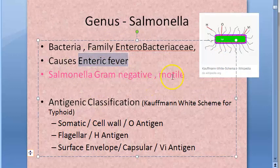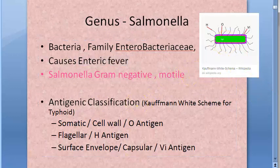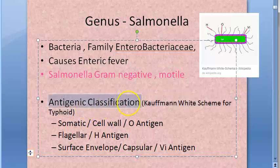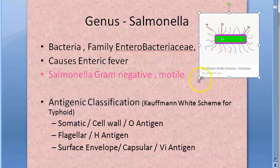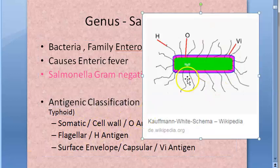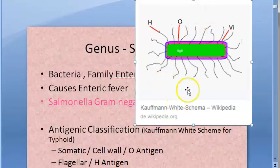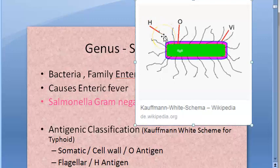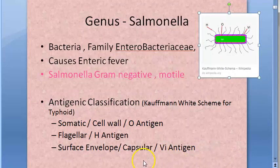These bacteria are motile, so they have a lot of flagella — you can see flagella all over. What antigens are present in them? You have the O antigen, which is in the cell wall — you can see it is pointing to the cell wall. Then you have the H antigen, which is the flagellar antigen, and the Vi antigen, which is the capsular antigen. The capsule is outside, so it covers the cell wall.